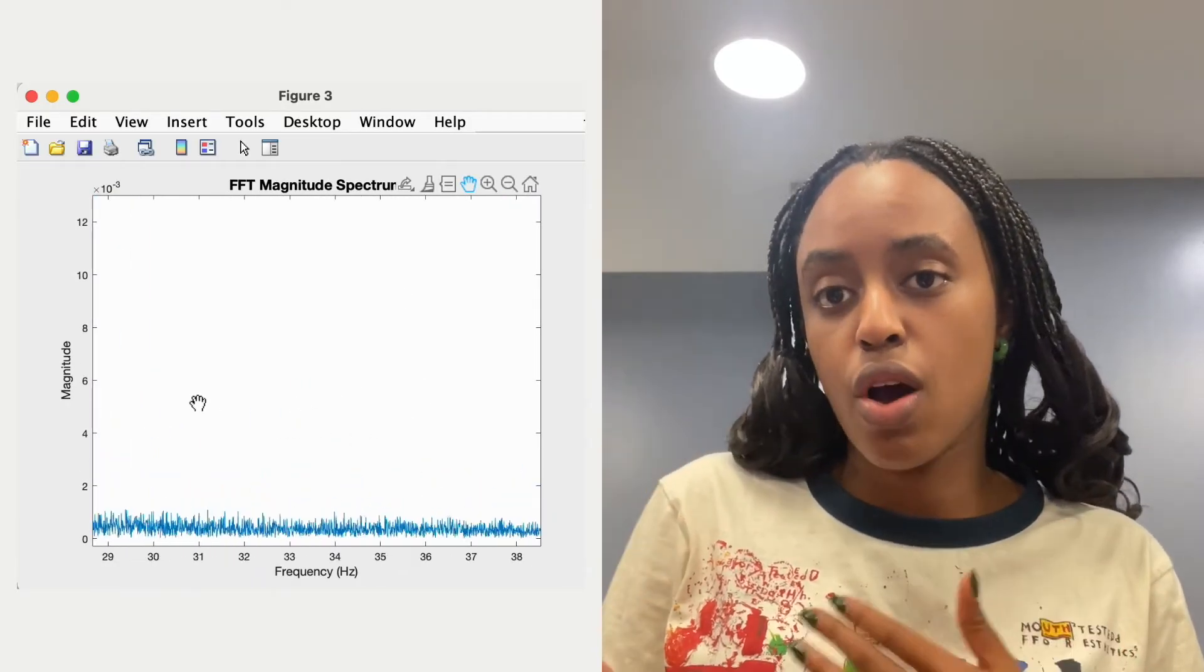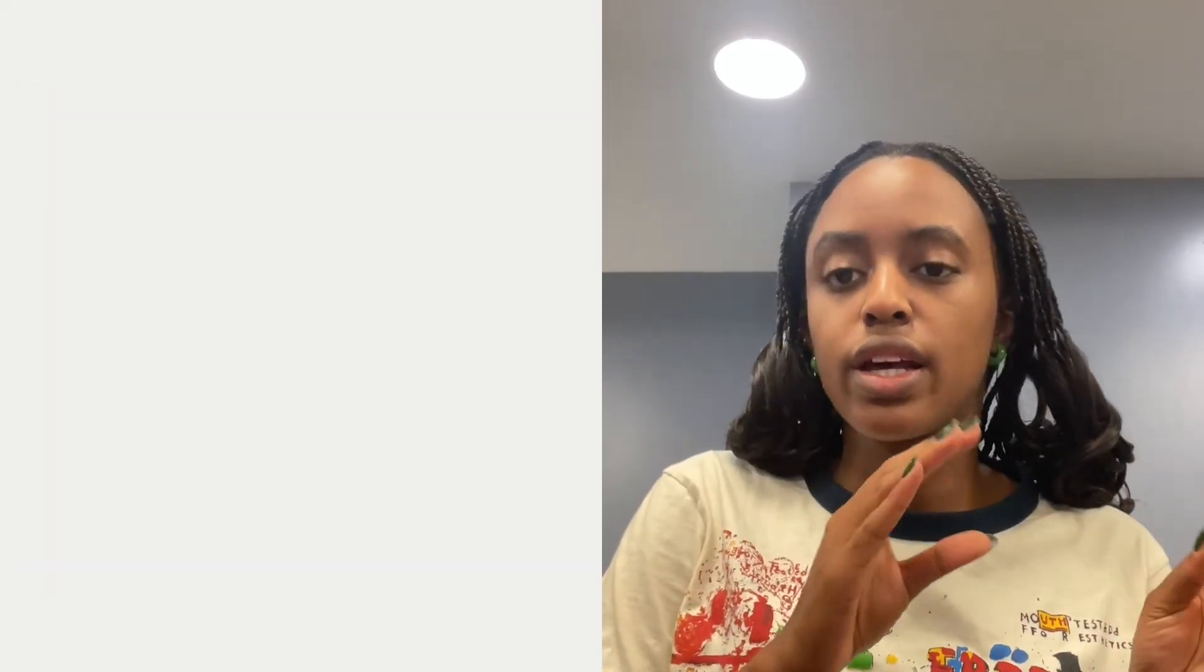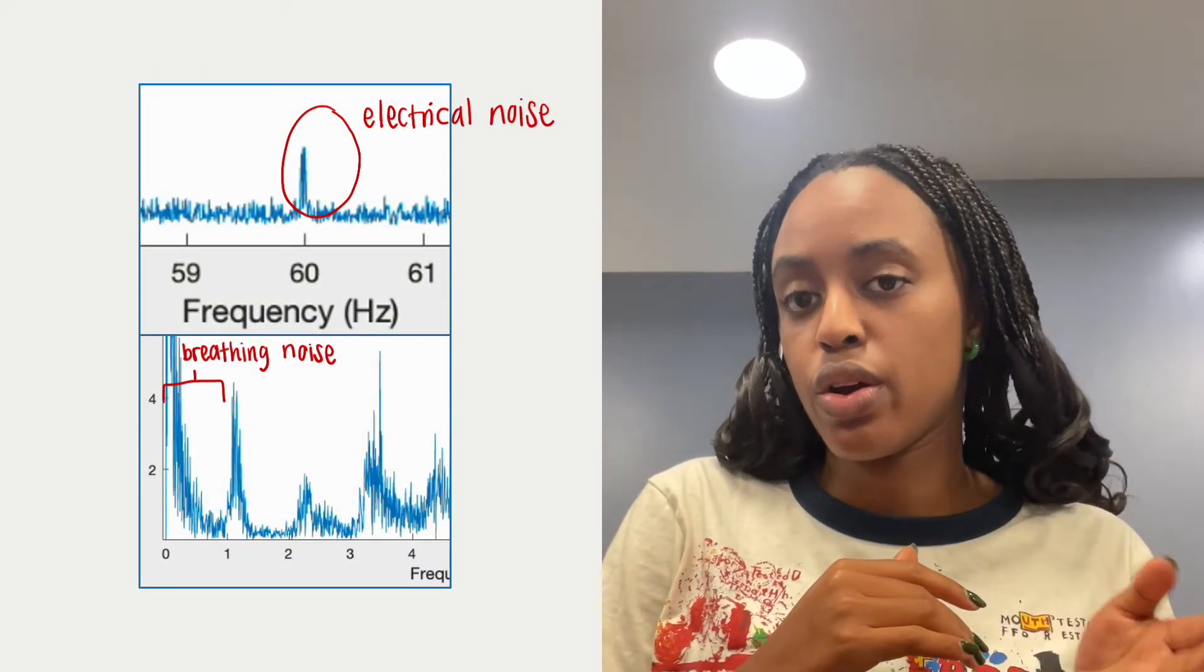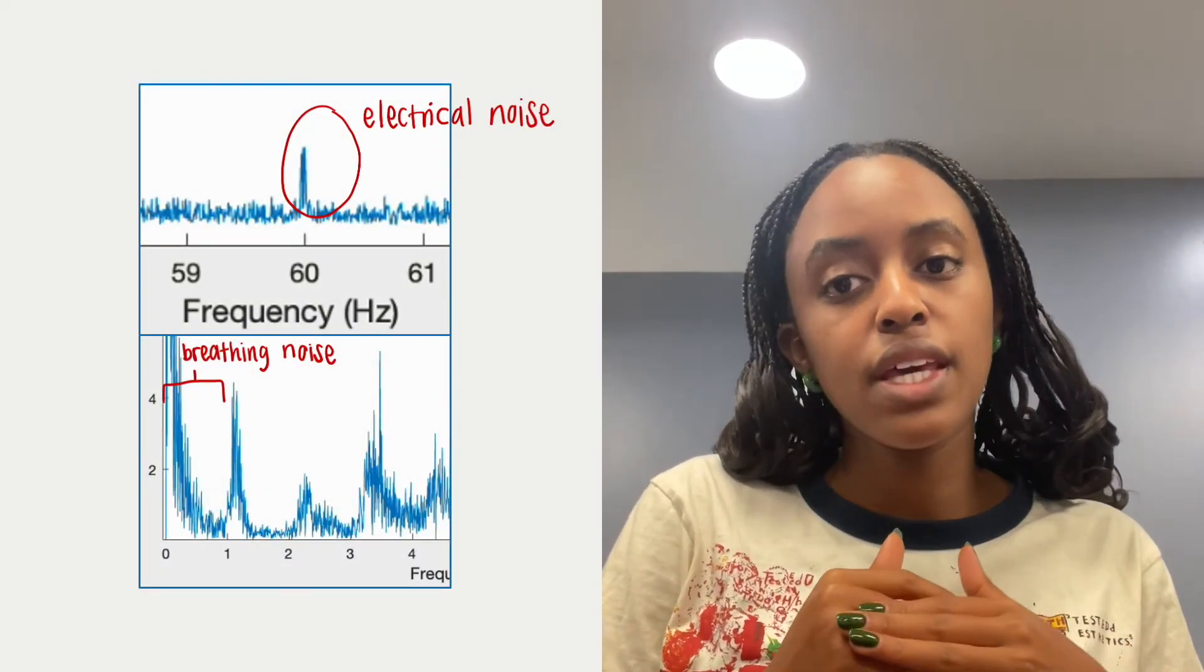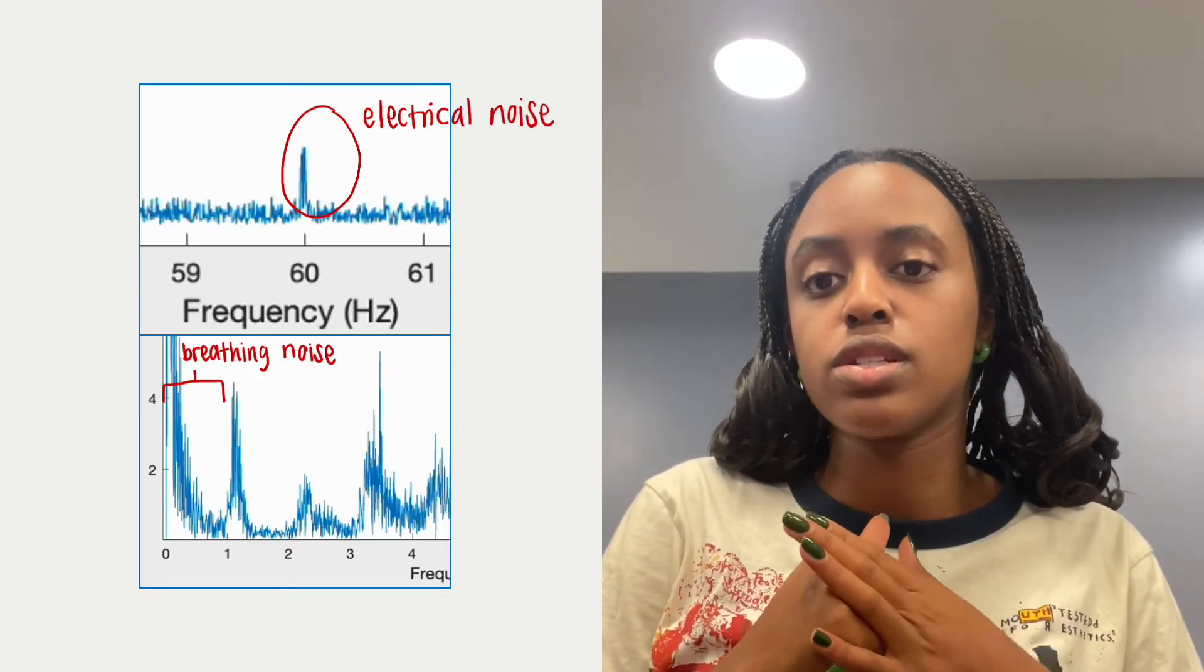Since breathing rate is slower than heart rate, this is concentrated at the lower range of frequencies, less than 1 Hz. We can also see a peak at 60 Hz, which corresponds to electrical noise.